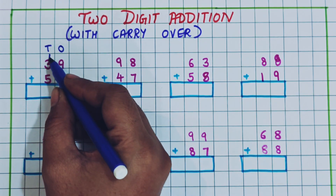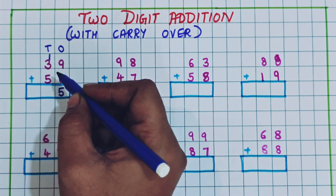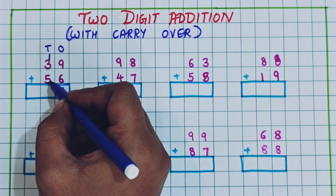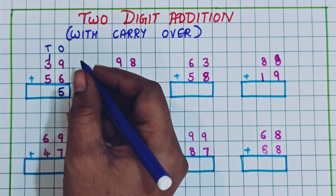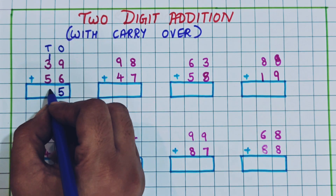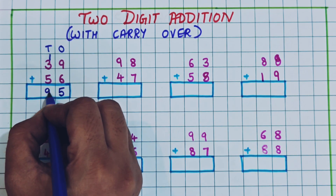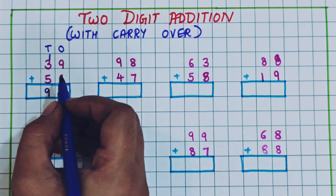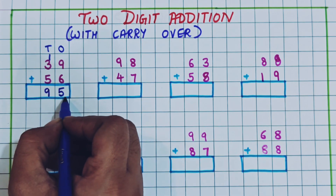Now 1 plus 3 is 4, and 4 plus 5 is 9. So here I will write 9. The answer is 95.